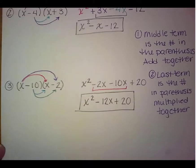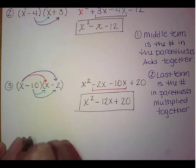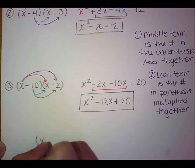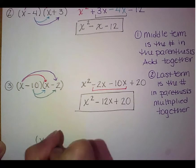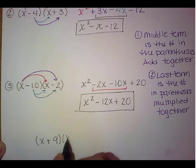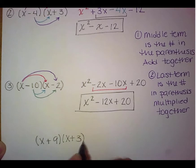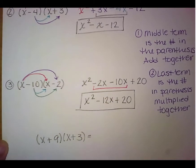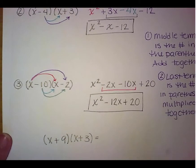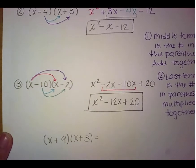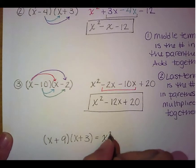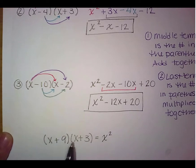So for example, and this is an additional example, so if I have something like x plus 9 times x plus 3, okay I can easily factor or FOIL this without actually doing FOIL. I know that it's going to lead off with x squared because my first two things multiplied together is x times x which gives me that x squared.